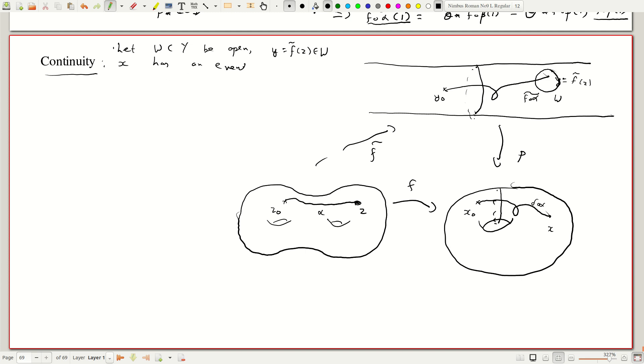So x has an evenly covered neighborhood u. So this has an evenly covered neighborhood u.